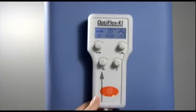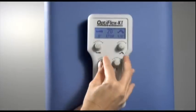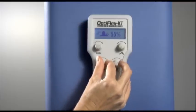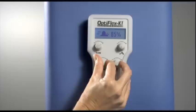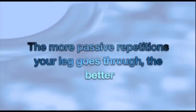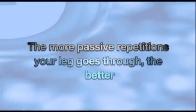To change the speed of the machine, use the knob symbolized by the picture of a snail. Push the speed knob in and turn in the appropriate direction, keeping in mind that this should be set at a comfortable speed for the patient. Remember, the more passive repetitions the knee goes through, the better.